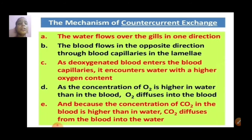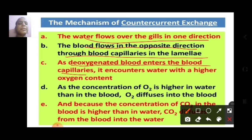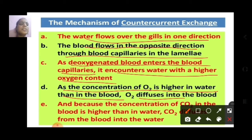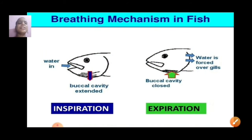The mechanism of counter-current exchange helps in the exchange of gases. Water flows over the gills in one direction while blood flows in the opposite direction through the blood capillaries in the lamella. As deoxygenated blood enters the blood capillaries, it encounters water with higher oxygen content. Since the concentration of oxygen is higher in water than in blood, oxygen diffuses into the blood. Because the concentration of carbon dioxide in the blood is higher than in the water, carbon dioxide diffuses from the blood into the water. This is the counter-current mechanism.